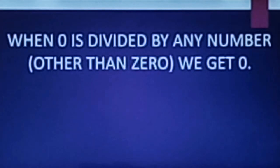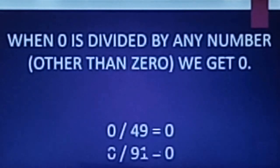When 0 is divided by any number other than 0, we get 0. Let me take some examples so that you can understand this. 0 divided by 49 is 0. 0 divided by 91 is 0.